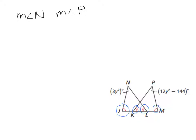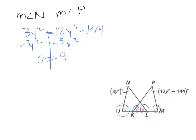The third angle theorem says that if two pairs of angles in the triangle are congruent, then that third pair of angles are also congruent, meaning they have the same measure. So in this case, we know that 3y squared is equal to 12y squared minus 144. This is exciting because as an algebra person I love this — it's totally quadratic. Since it's quadratic, we need it to equal 0, so we're going to subtract 3y squared from both sides.